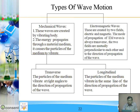Now see the types of motion — mechanical waves, types of waves: mechanical waves and electromagnetic waves. Mechanical waves are again classified into two: transverse and longitudinal.